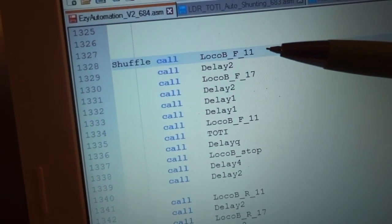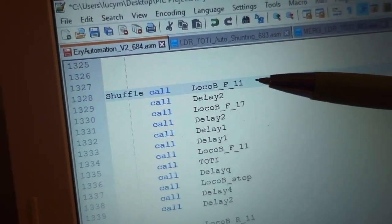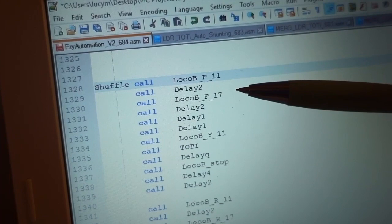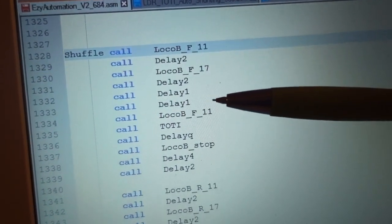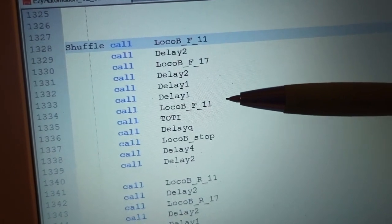The loco starts at speed step 11, and after two seconds it speeds up to speed step 17. Then we wait for four seconds, slow back down to speed step 11,